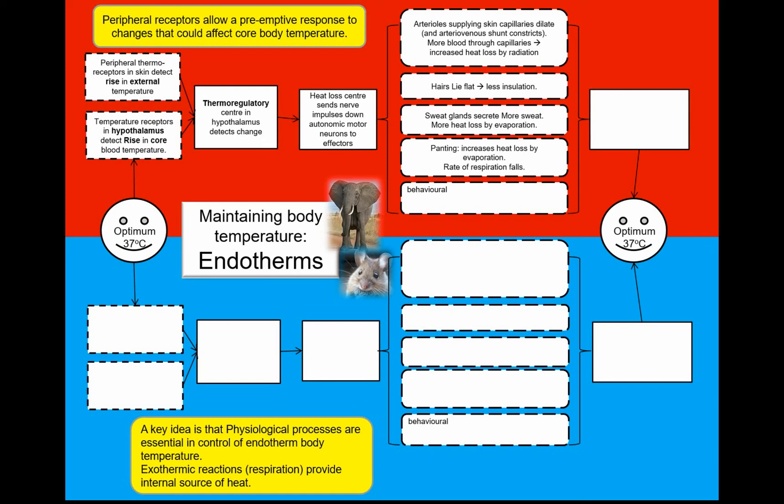Other things you can do behaviorally: go and find some shade, orientate your body out of the sun, or just become less active. People in Mediterranean countries have siestas — they rest during the hottest part of the day where it's dangerous to be active. All these things will help reduce your core body temperature back down to the set point.